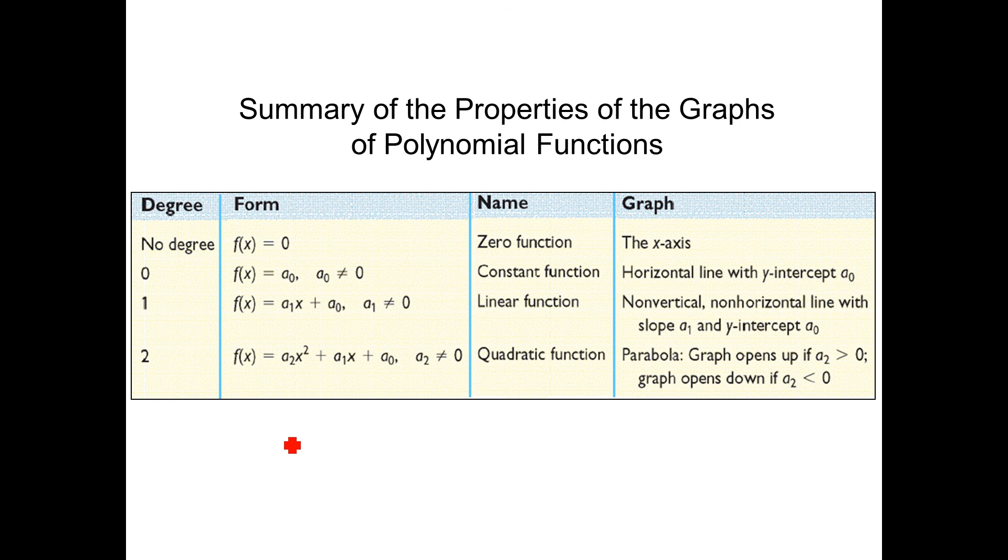So quick summary here. If you have a constant, the degree would be 0. It's a constant function. If we have x to the first, we are linear. That's a degree of 1. And if we are quadratic, we have a degree of 2.